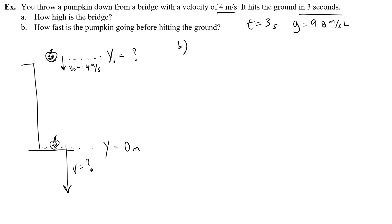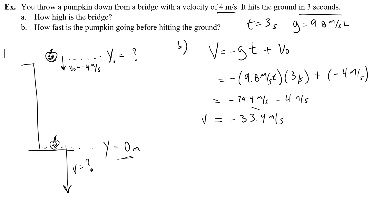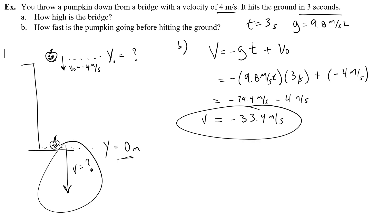We are trying to figure out what is that velocity when you've gotten to a height of zero. The easiest equation is just our straightforward velocity as a function of time: v = negative g·t + v₀. So: negative 9.8 meters per second squared times 3 seconds, plus that negative 4 meters per second. I'm going to get a negative number plus a negative number. 9.8 times 3 is 29.4, so it's negative 29.4 meters per second minus 4, giving me a negative 33.4 meters per second for the final velocity.